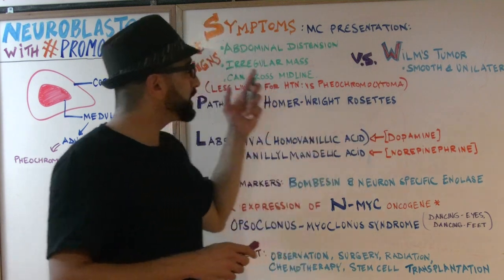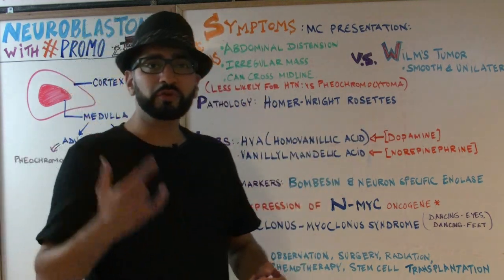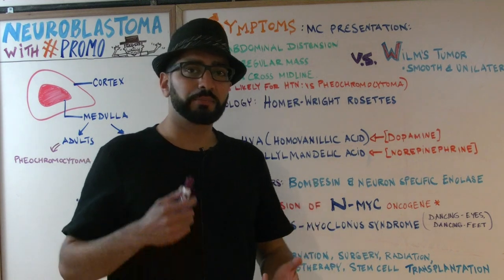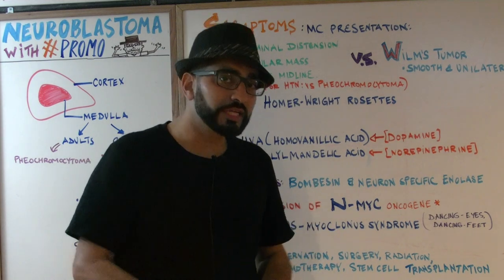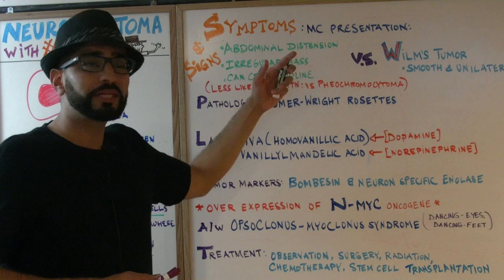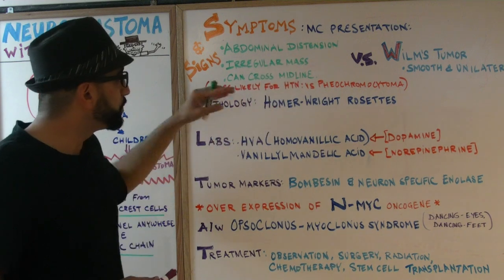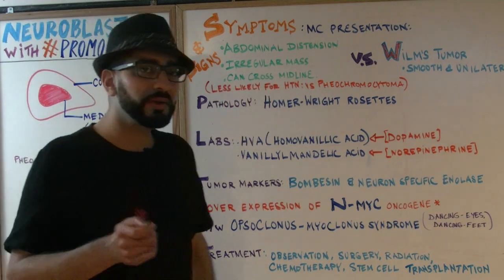Another key distinction: in pheochromocytoma, we said there is episodic hypertension. However, with neuroblastoma, you are rarely ever going to see hypertension.